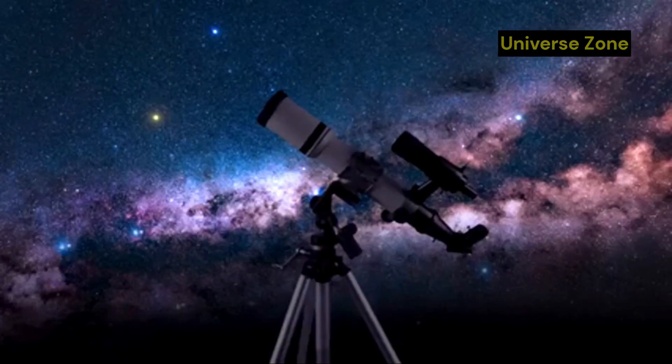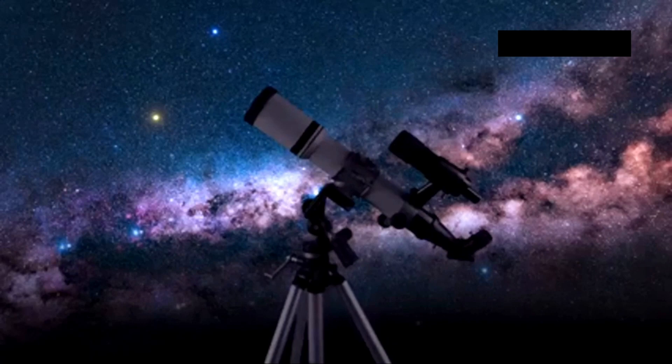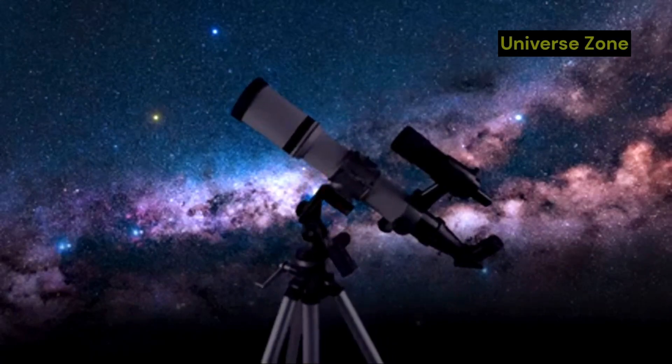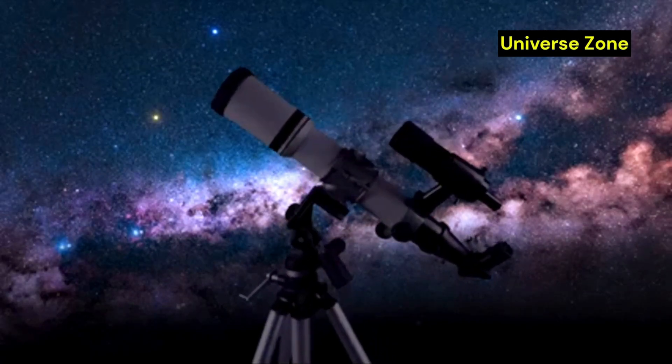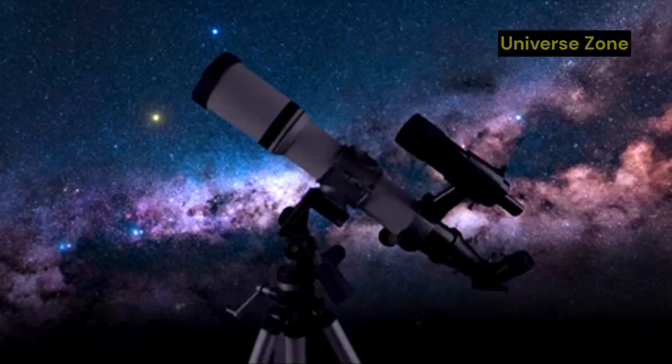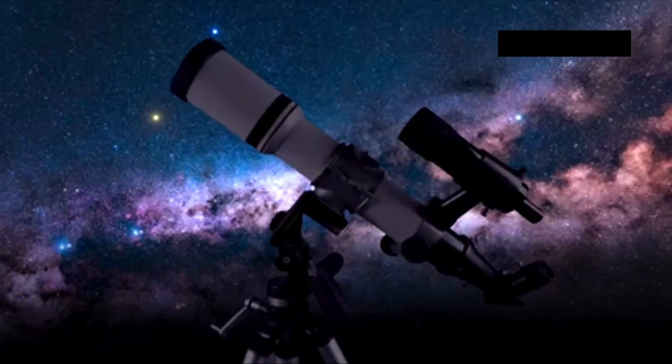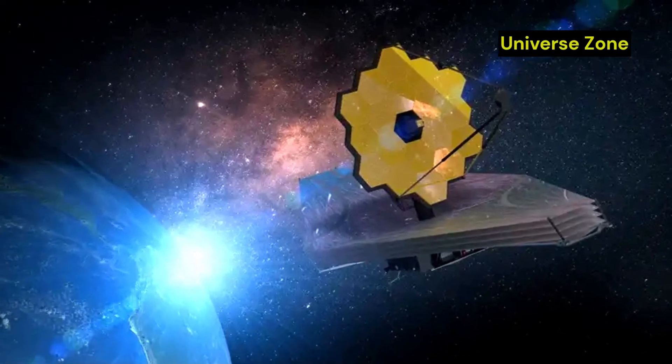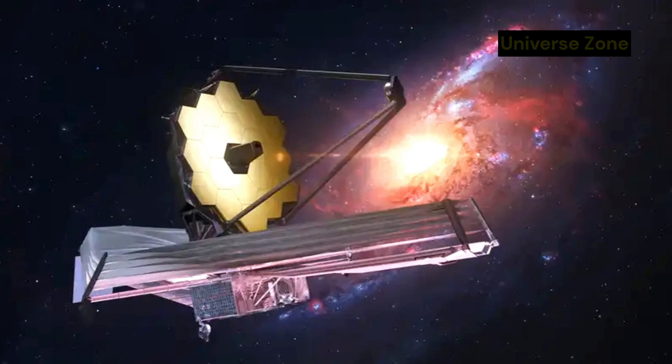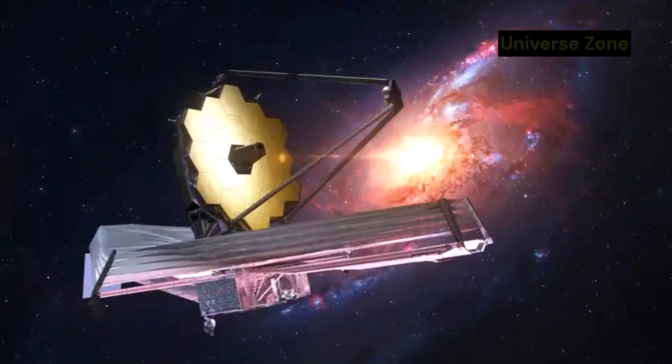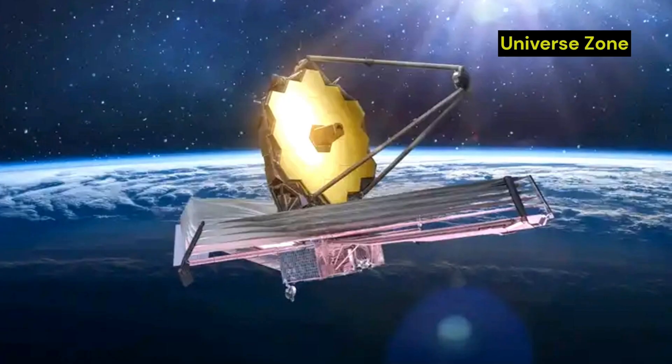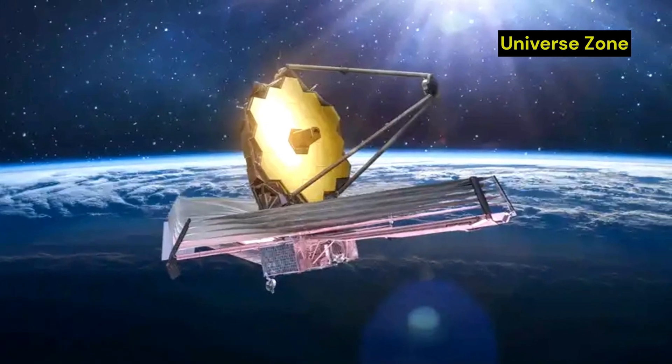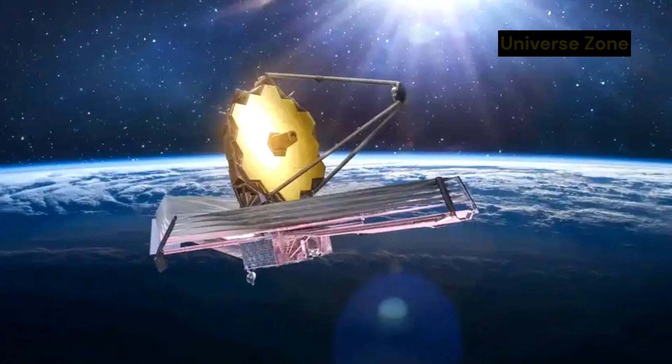The JWST is designed to observe the universe in infrared light, which is crucial for studying the early universe, star formation, and the atmospheres of exoplanets. This is the type of light emitted by objects that are too cold or too faint to be seen in visible light. By observing in infrared, the JWST can detect celestial bodies that were previously invisible to us.